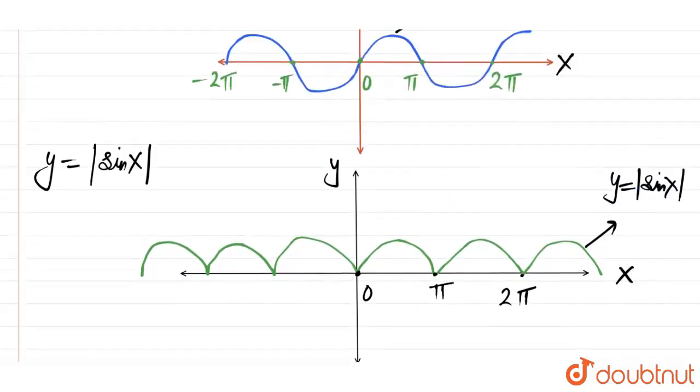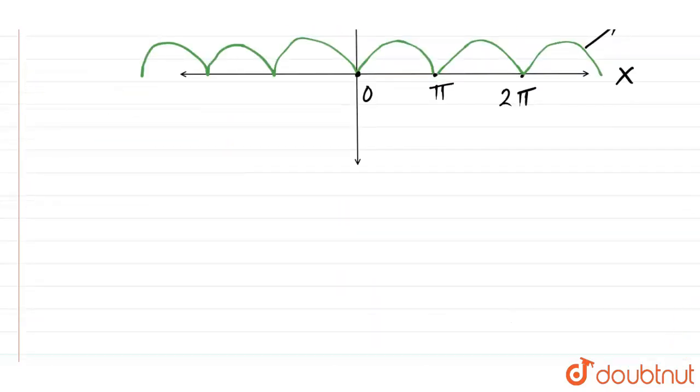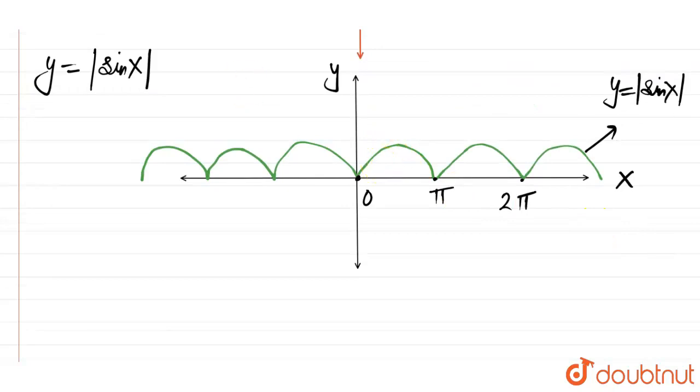Now in the question, we have mod of sin x would be equal to cos x. So we will draw cos x graph over this and see where it matches. Cos x is like this starting from 0. Starting from 1. Like this. Something like this. And on the left hand side also like this. This is y equal to cos x. Now the point where the value is same. This is y equal to cos x graph.